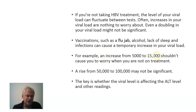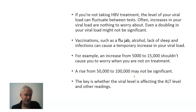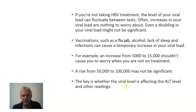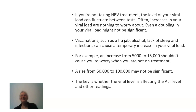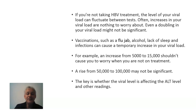An increase from five to fifteen thousand shouldn't be a cause of worry when you're not on treatment. A rise even from fifty thousand to one hundred thousand may not be significant — we just keep checking it every year or every six months to see what it does. The key is whether the viral level is affecting the ALT and other readings. It doesn't matter what your level is: if your level is one hundred thousand and your ALT is 200, then you've got to think about antiviral treatment.